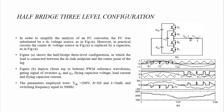However, in practical circuits, the center DC voltage source in Figure A is replaced by a capacitor, as in Figure A. Figure A shows the half bridge 3-level configuration, in which the load is connected between the DC link midpoint and the center point of the leg. Figure B depicts, from top to bottom: PWM reference waveforms, gating signal of switches Q1 and Q2, flying capacitor voltage, load current, and flying capacitor current. The parameters employed were: VDC = 200 V, R = 5 ohm, L = 5 millihenry, and switching frequency equal to 500 Hz.